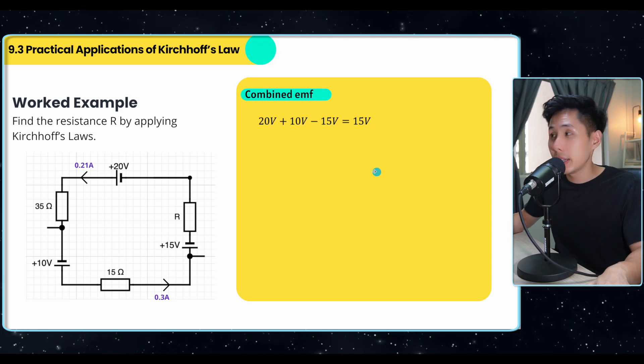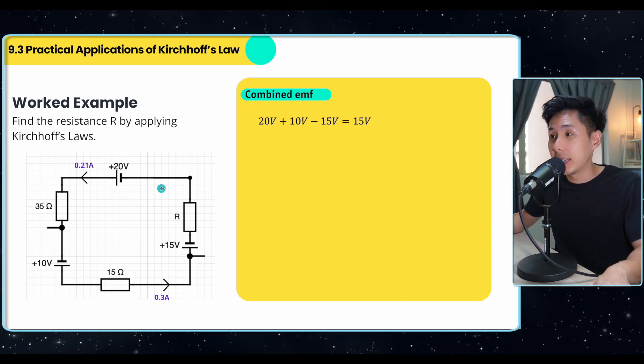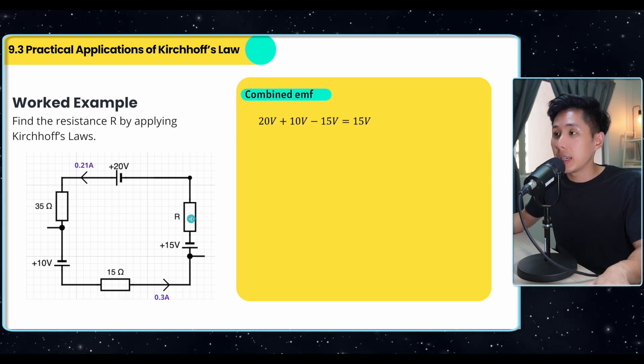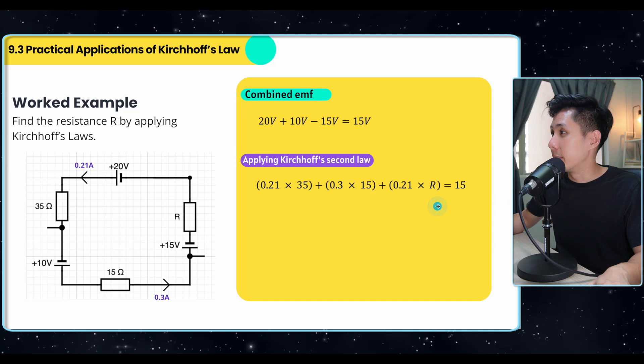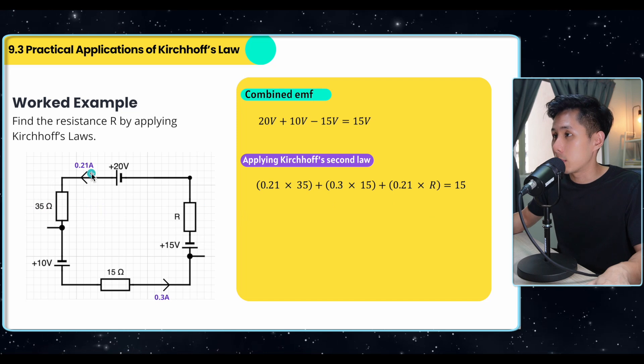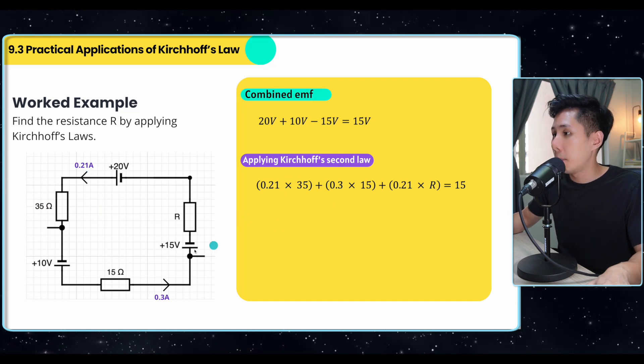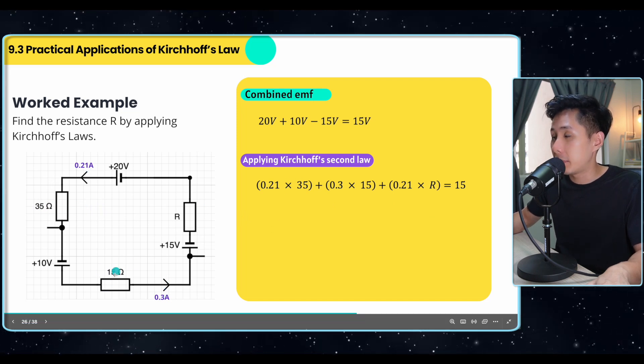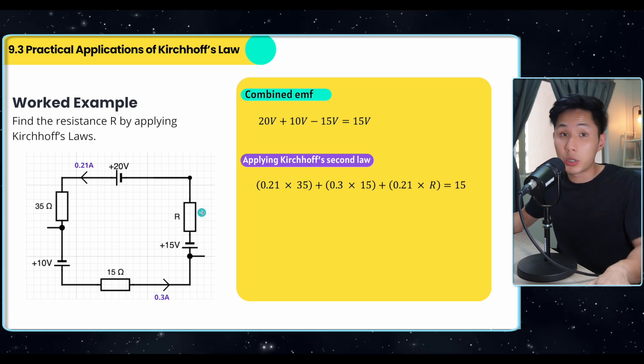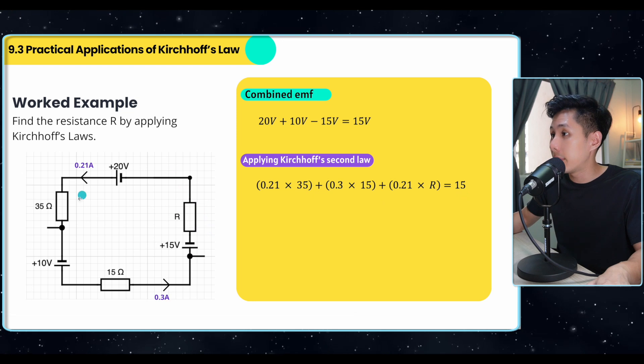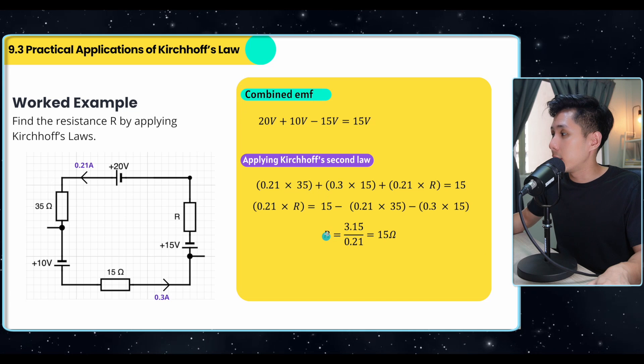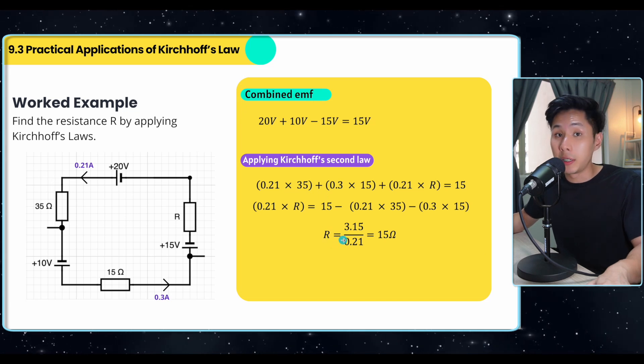And that is important because what Kirchhoff's second law says is that the total amount of potential difference should be equal to the source. So this will be useful. What I need to do is just get the potential difference across this, 0.21 times 35 plus 0.3 times 15, potential difference 0.21 multiplied by R, which is unknown, equal to 15, which is the combined EMF. And with that knowledge, I can get what the value of R is by just applying some linear equation.